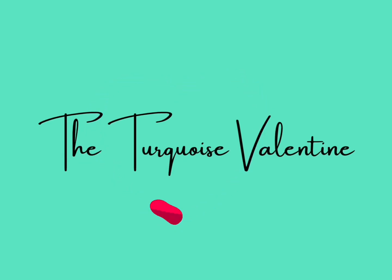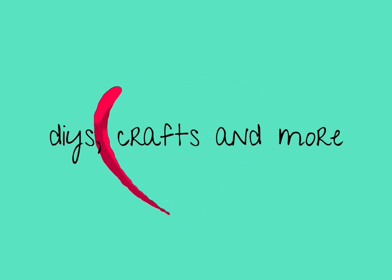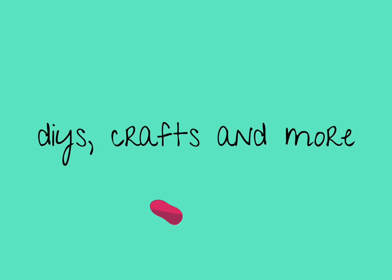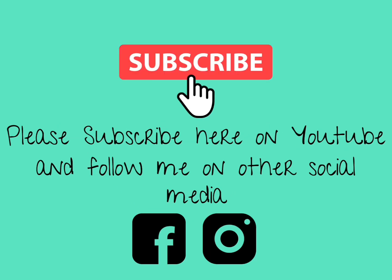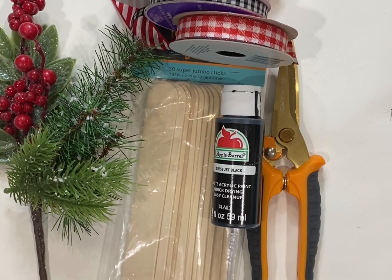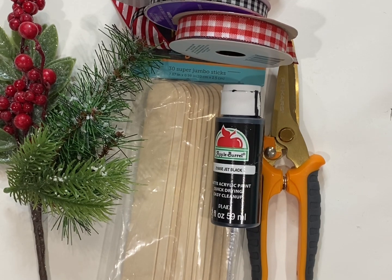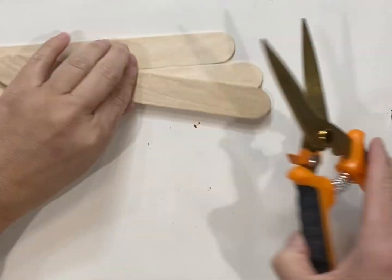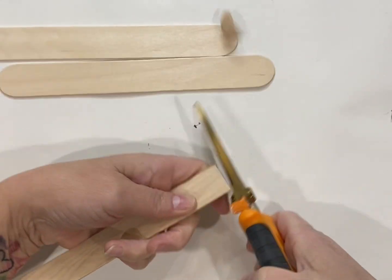Hey, it's Lee with the Turquoise Valentine, and today we're gonna make a cute little miniature shim tree. Thank you for watching and I hope you follow me on other social media. You're gonna need some jumbo craft sticks, some paint, something to cut the sticks with, some ribbons, greenery, and embellishments.